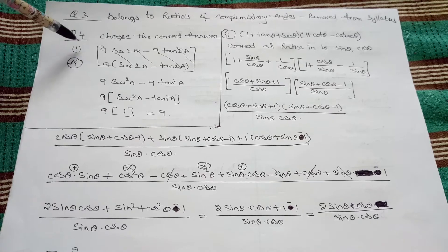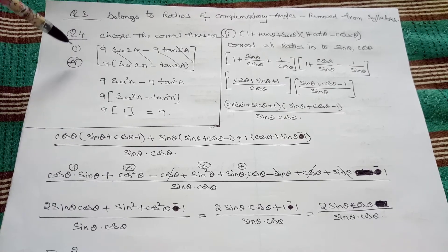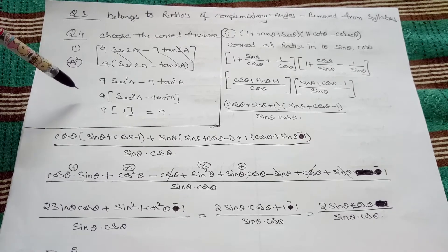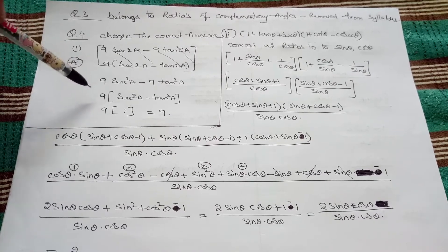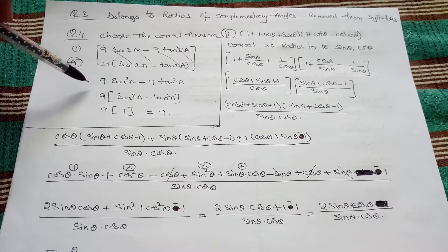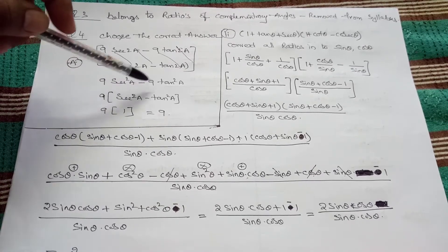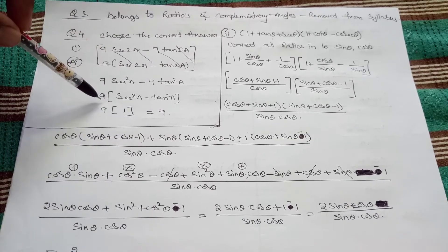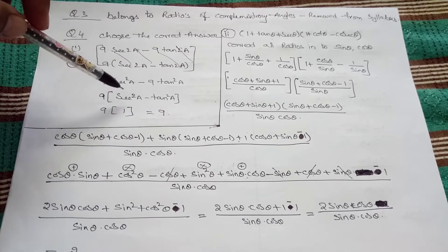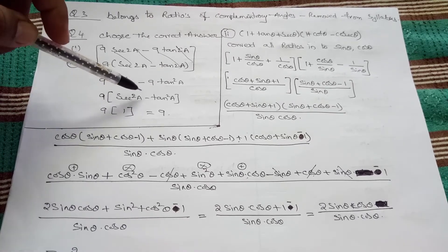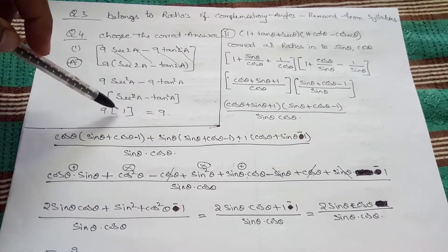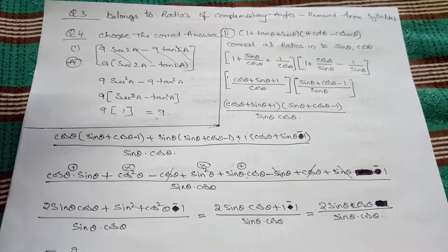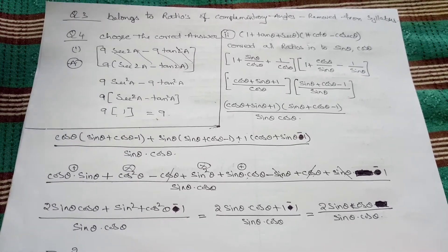Question number four: choose the correct answer. I did not write A, B, C, D — just the answer. So, 9 sec²θ minus 9 tan²θ is equal to how much? Take 9 common: sec²θ minus tan²θ. Since sec²θ minus tan²θ equals 1, therefore 9 times 1 is 9. This is the answer. You can choose whether it is A, B, C, or D.